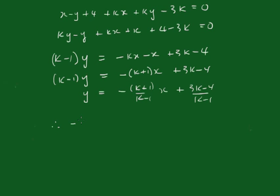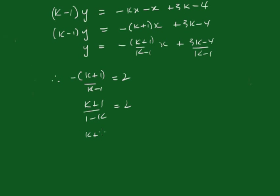Therefore, -(k+1)/(k-1) = 2. We're going to reverse the denominator. (k+1)/(1-k) = 2. And then that becomes k + 1 = 2 - 2k. 3k = 1, which means k = 1/3.